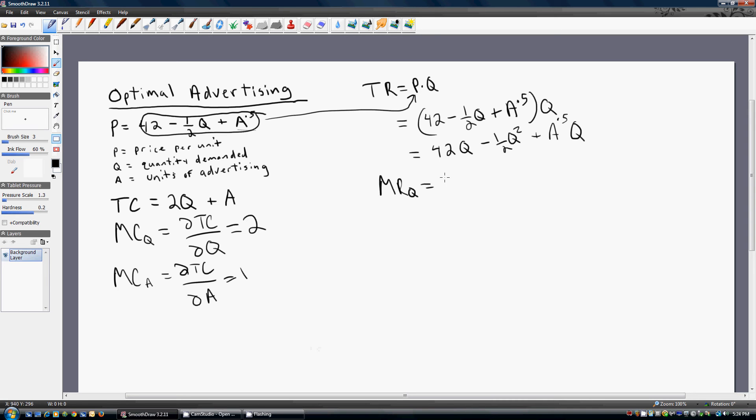The marginal revenue is going to be the partial derivative of the total revenue equation with respect to output. We get 42 minus Q plus the square root of advertising.